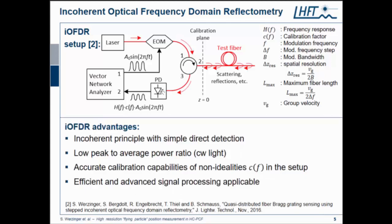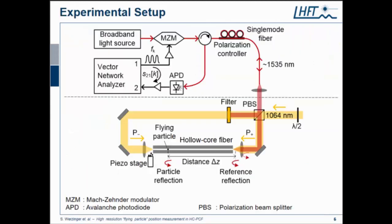Some advantages of this technique is that it's in principle a simple direct detection, and we have a low peak to average power ratio, so we use just continuous wave light. It gives us very accurate calibration capabilities. You all know RF engineers use network analyzers for their most precision measurements, and we can calibrate the non-idealities in the setup. It also gives us some efficient advanced signal processing techniques we can use.